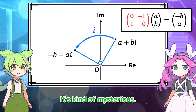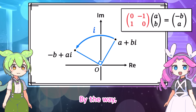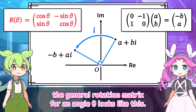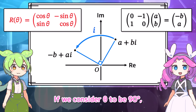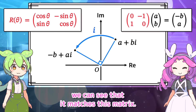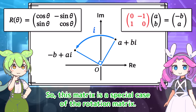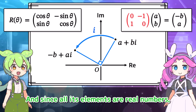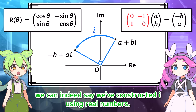So we can consider this matrix to represent the imaginary unit I. The general rotation matrix for angle theta looks like this. If we consider theta to be 90 degrees, we can see that it matches this matrix. So this matrix is a special case of the rotation matrix. And since all its elements are real numbers, we can say we've constructed I using real numbers.